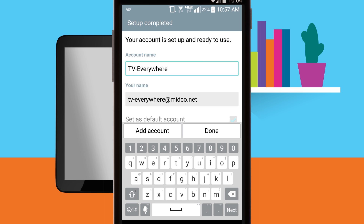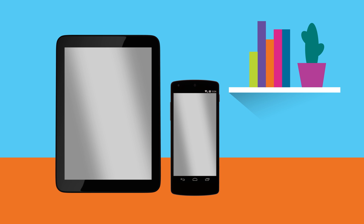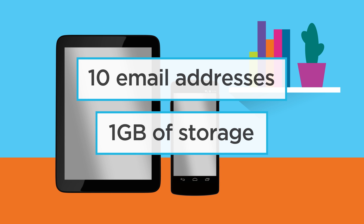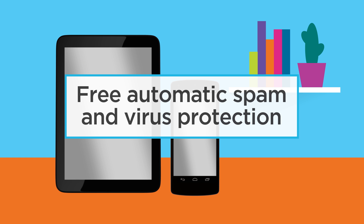Enter an account name and outgoing name. This will be the name people will see for the emails you send from your Midco email address. Tap Done. That's all it takes. Your Midco account includes up to 10 email addresses with up to 1 gig of storage space per account. Midco protects every account from email spam and viruses for free.